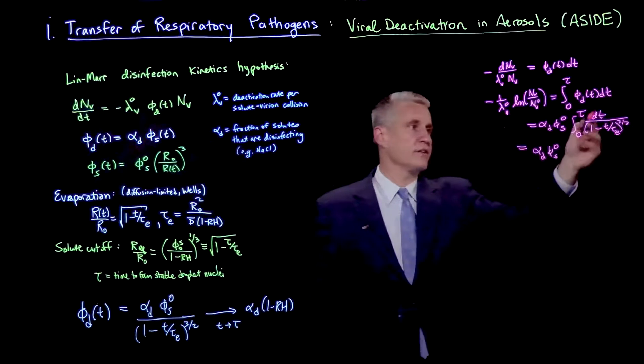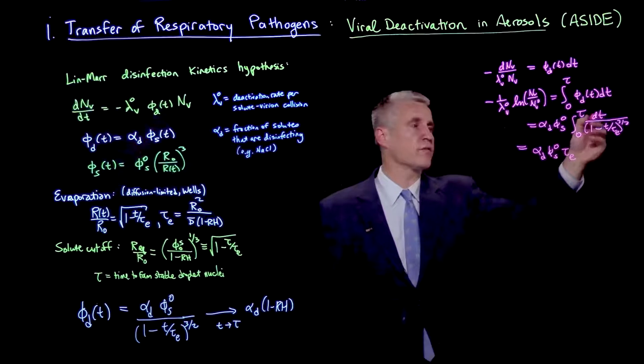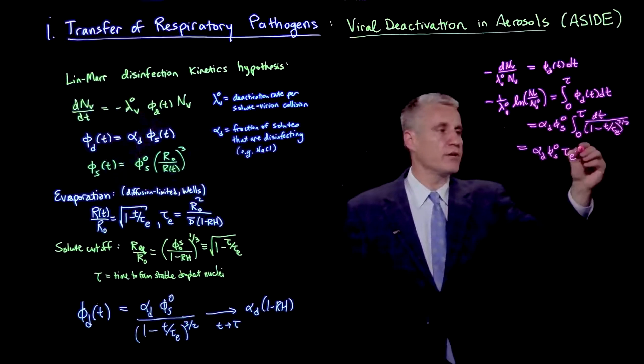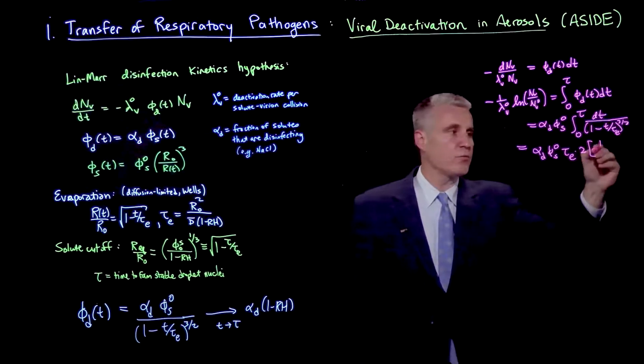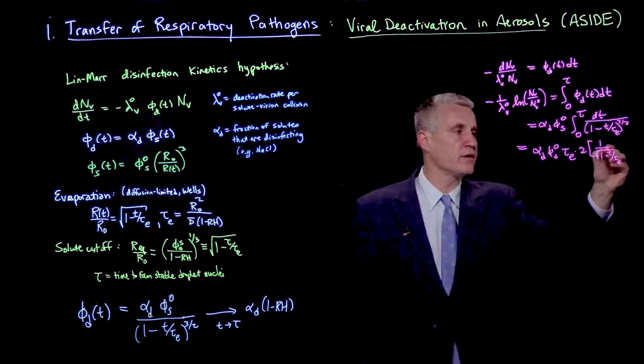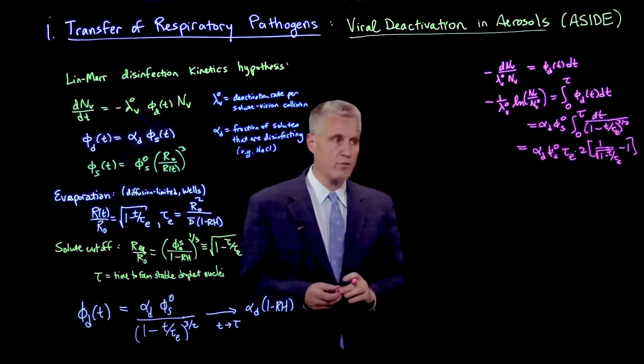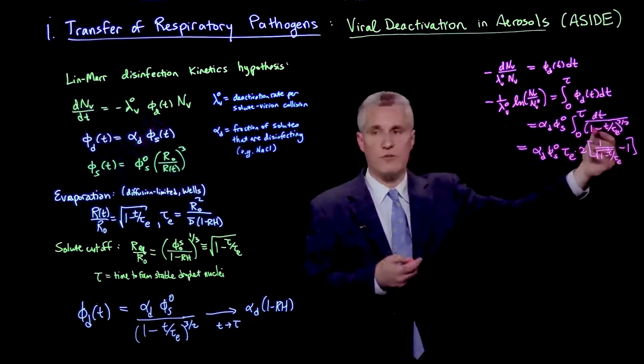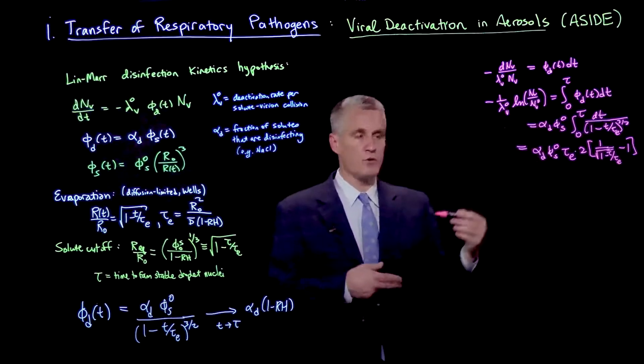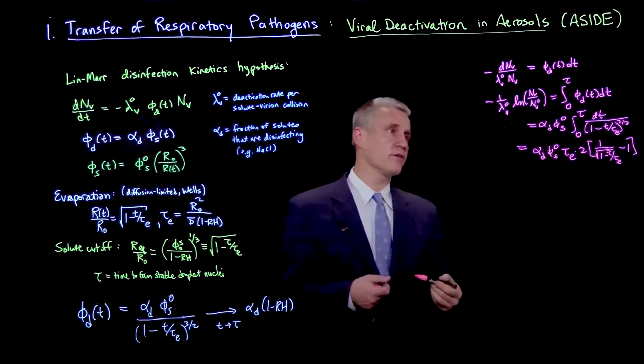We can do that integral and get alpha d phi s 0, and to get the integration variable, we need to have a tau e here and write that as dt over tau e. Doing the integral, we would get 2 times 1 over square root of 1 minus tau over tau e minus 1. Evaluating the two limits of integration, the integrand is 1 over 1 minus t over tau e to the 1 half power times 2.